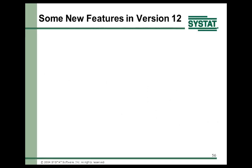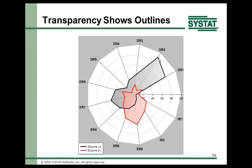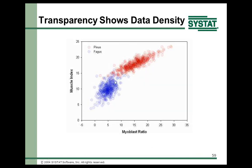Some new features: we added a radar plot for showing multiple variables — here with something like 50 different variables shown as a radar area plot with a vector plot overlay. Here's a radar plot with area plots showing transparency and a slight gradient for each area. What's useful about transparency is you can look through one area and see the outline of the other area. Transparency also shows data density — solid fills would just show a big mass of blue without revealing where the peak density is.